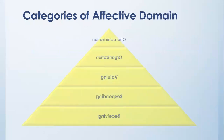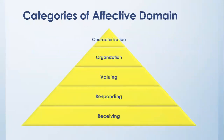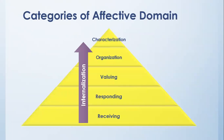There are five categories in the Affective Domain: Receiving, Responding, Valuing, Organization, and Characterization. Receiving is the first category where internalization starts. As we move through Responding, Valuing, Organization, and Characterization, the internalization process deepens. When the child reaches Characterization, it means the child is completely involved in that feeling. Characterization is the toughest stage in the Affective Domain, representing the deepest level of internalization.